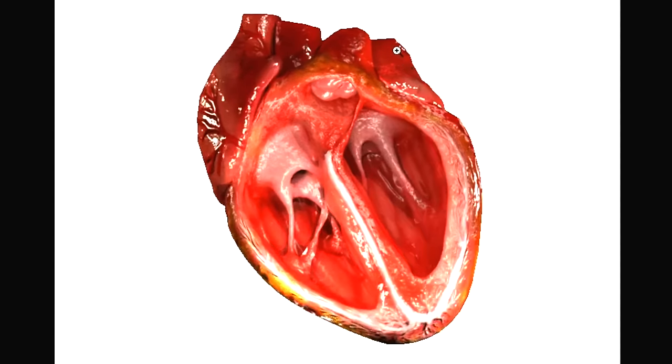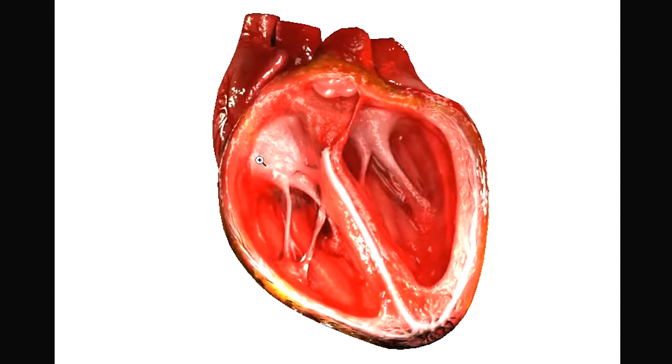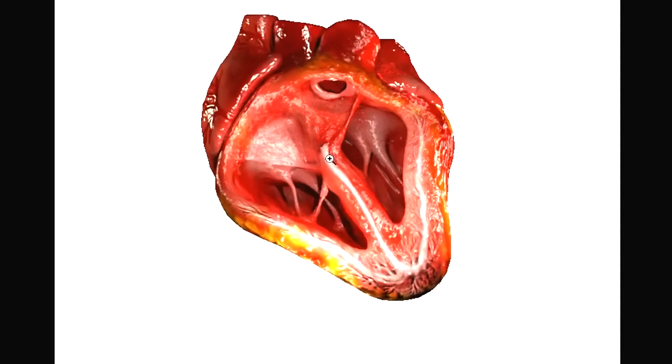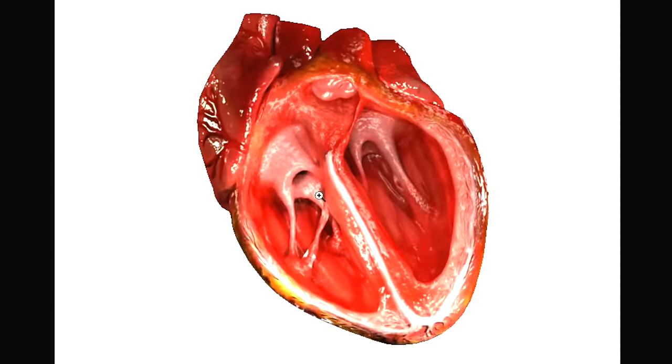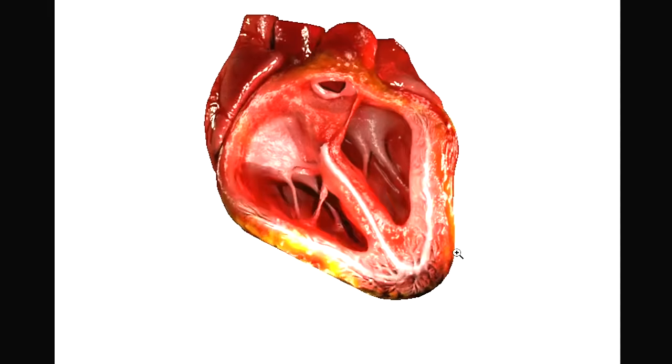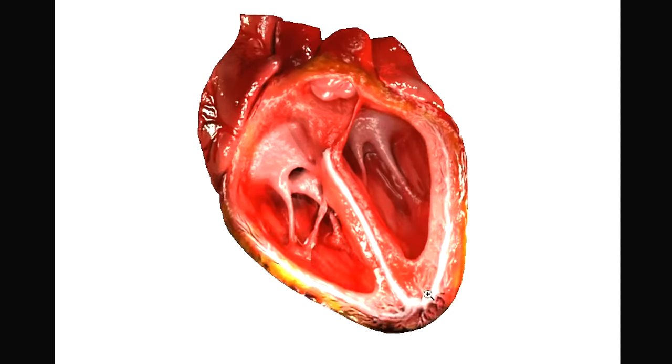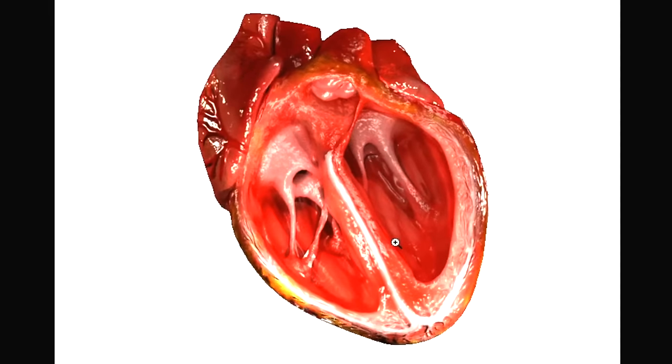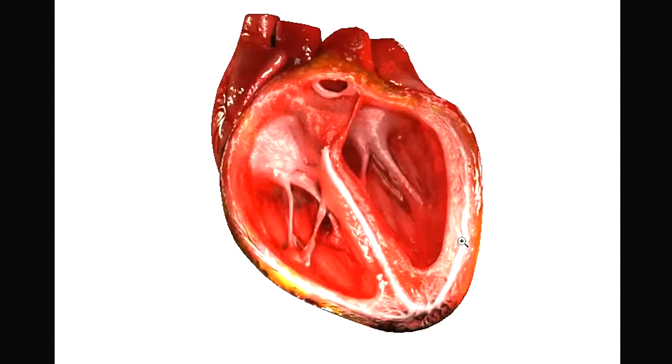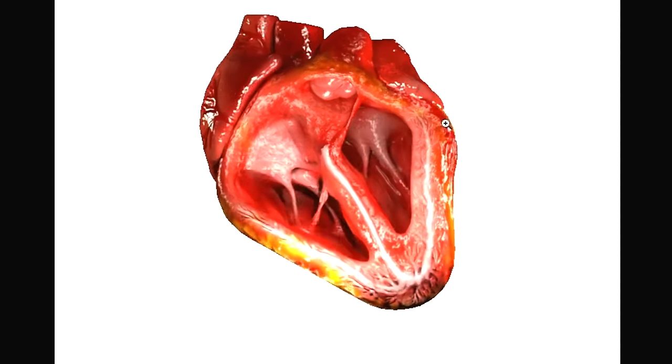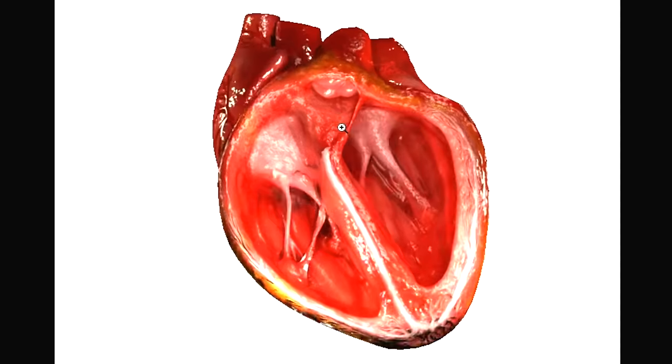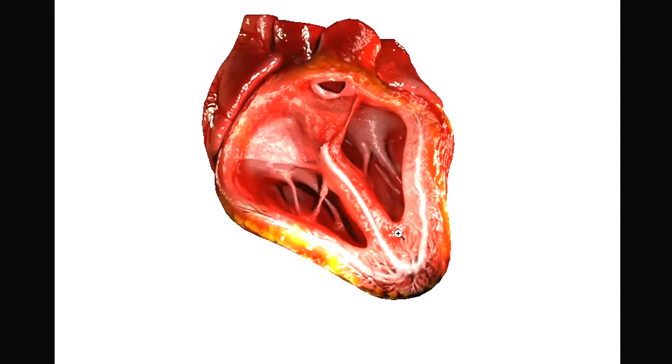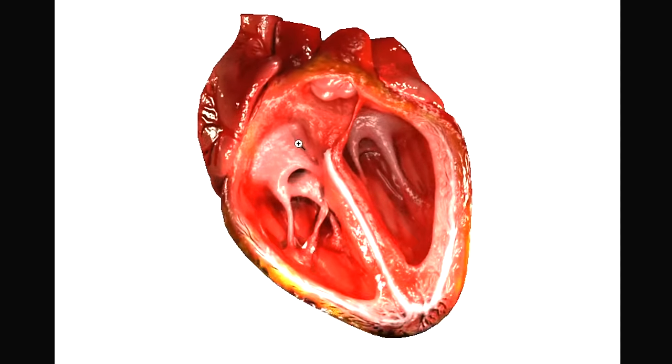So you can see that the atria are contracting first and then the signal is placed down here to the His-Purkinje system. It travels down very quickly down this His-Purkinje system and then up here into the myocardium. So the effect is that essentially the myocardium is contracting all at the same time. You want that to happen instead of having contraction occurring from the top down - you want contraction occurring all at the same time.